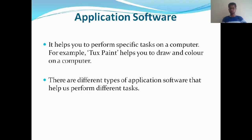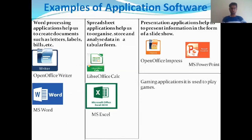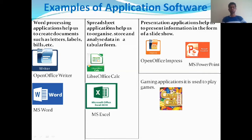There are different types of application software. Word processing applications help us to create documents such as letters, labels, and bills. Examples of word processing software include OpenOffice Writer and MS Word — you can create documents with the help of these two applications.